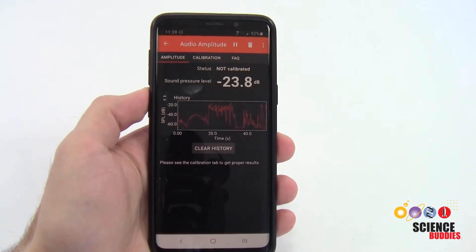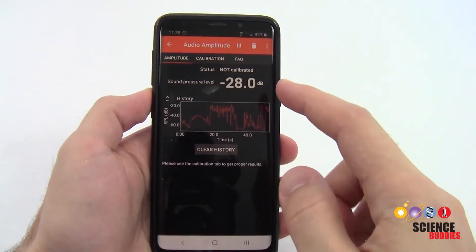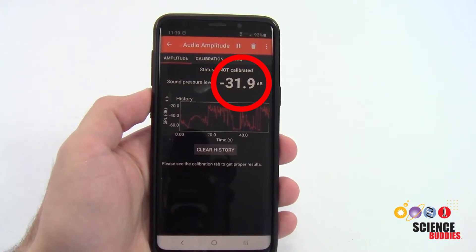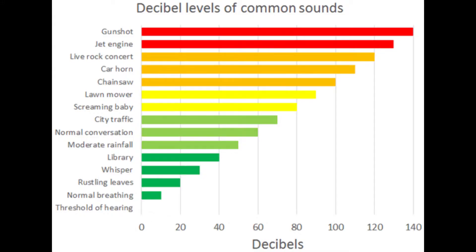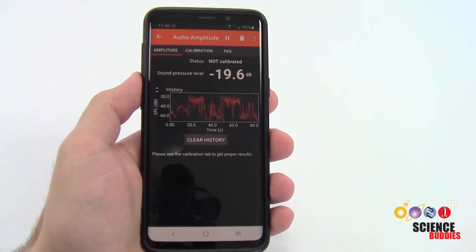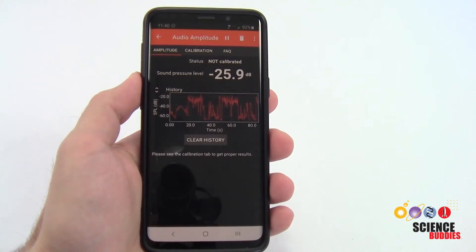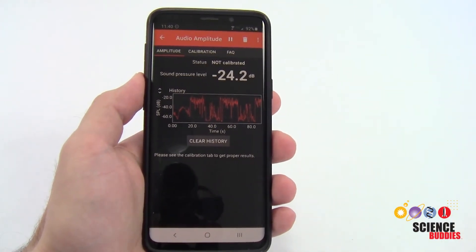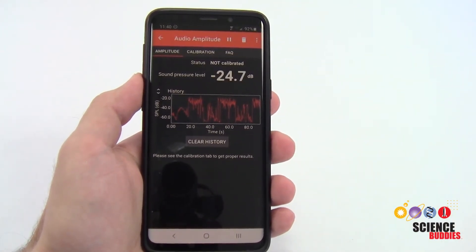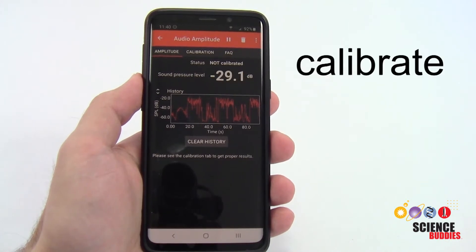When you open the audio amplitude sensor, you will probably see negative decibel readings, which is not consistent with the typical scale that we use to measure sound, which starts at zero for the threshold of human hearing and goes up to over 100 for very loud sounds like a jet engine. We're not going to get into the detailed math or physics behind that in this video, but we would like to make our phone's readings match up with that common decibel scale. In order to do that, we need to calibrate it.